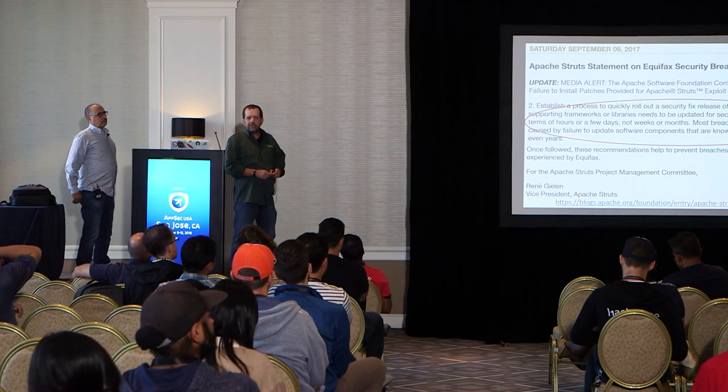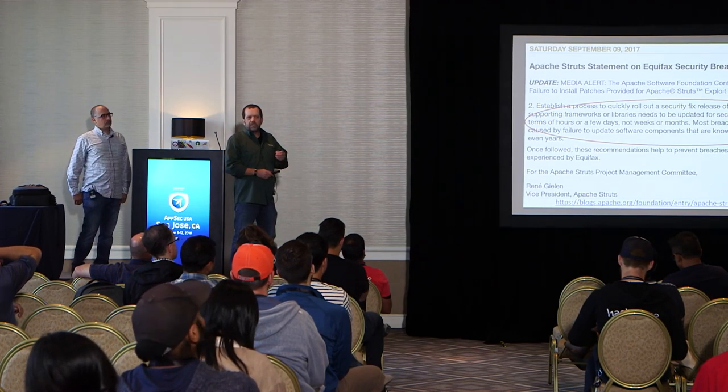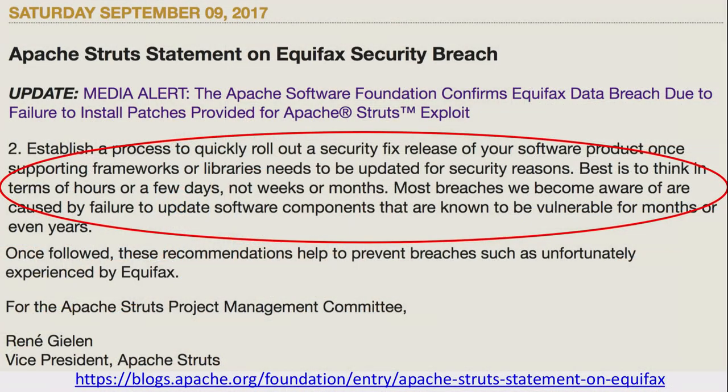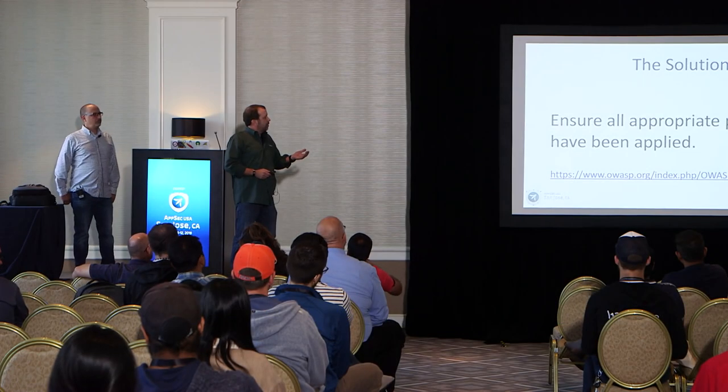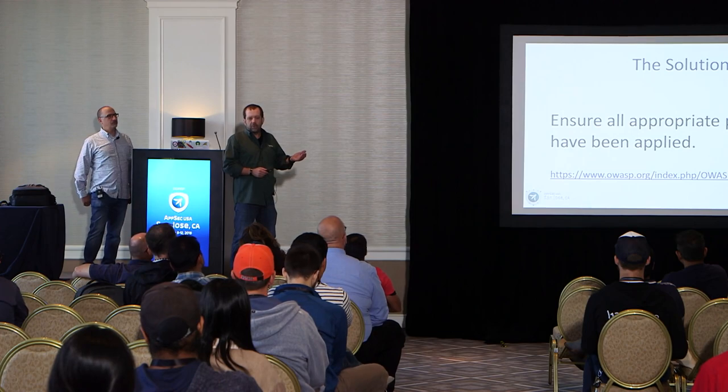CVE-5638 was detected in the wild in March of 2017 and was promptly patched by the Struts team. However, Equifax chose not to apply that patch. Had they applied that patch, that breach would not have occurred. What Rene is saying is very true: just apply patches. The solution then is we should ensure all appropriate patches have been applied and then we're okay, right?